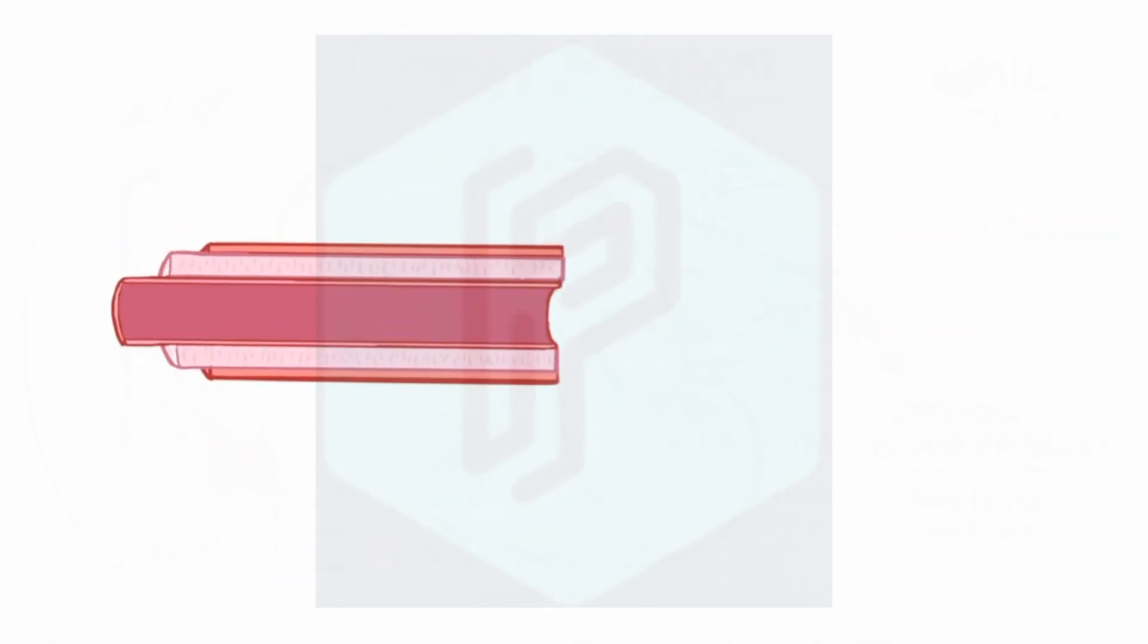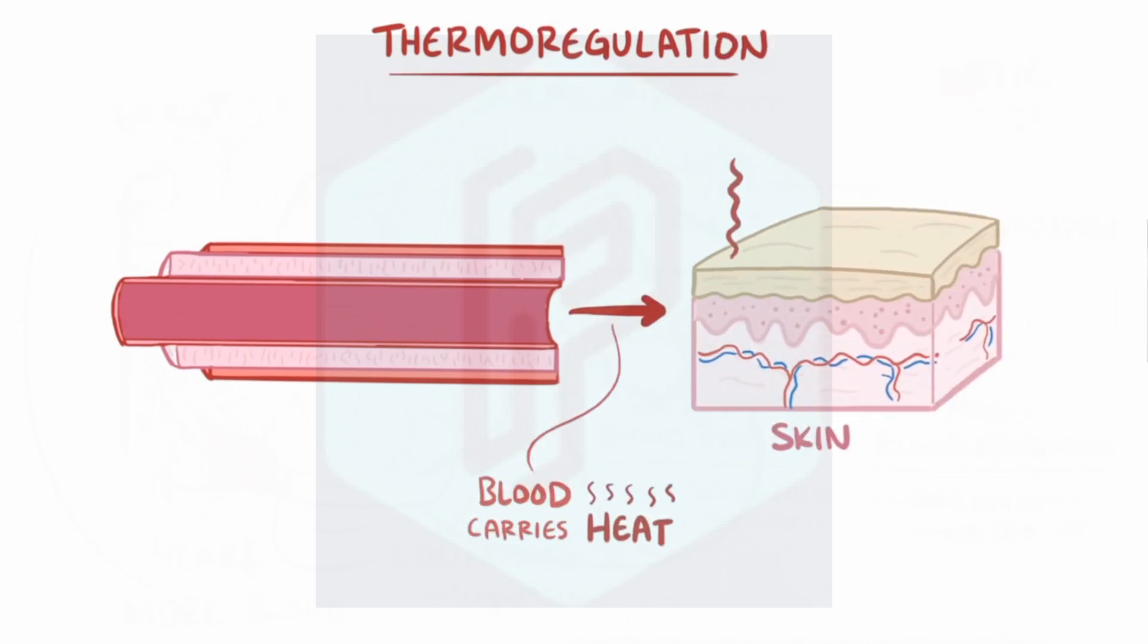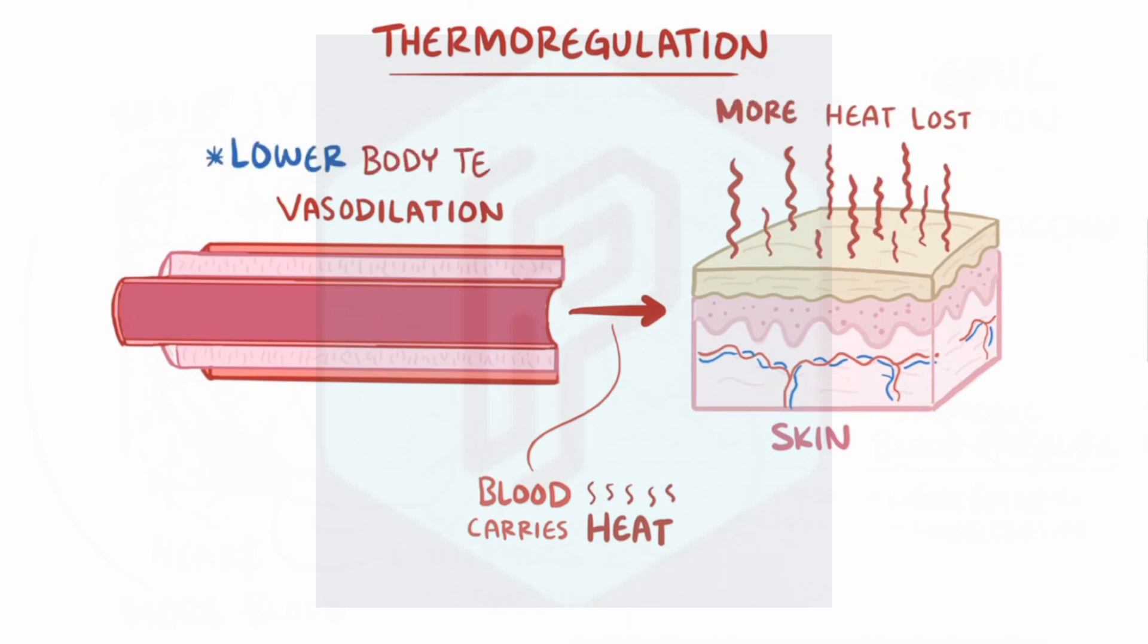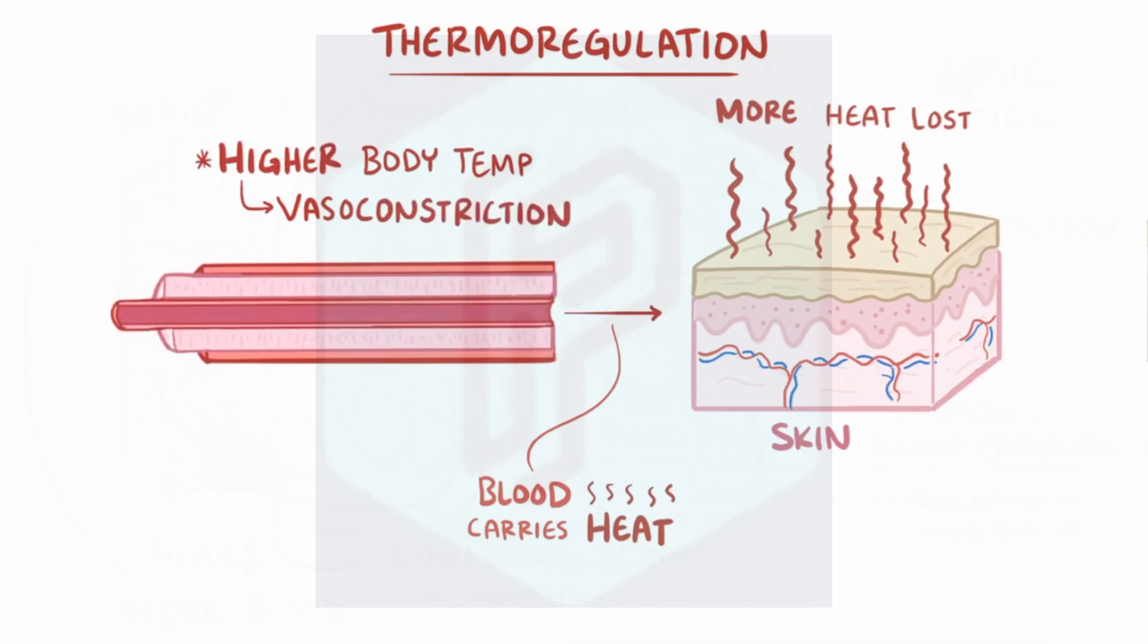This process can also help with temperature control, or thermoregulation, because blood carries a lot of heat with it, and when it gets close to the surface of the skin, more of that heat gets lost. So with vasodilation of the arterioles, more heat gets lost, which therefore helps to lower body temperature. Likewise, if you wanted to raise body temperature, vasoconstriction reduces blood flow, which means less heat gets lost through the surface of the skin.